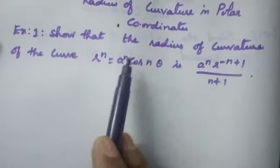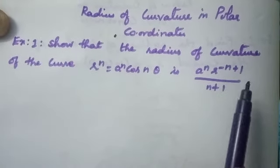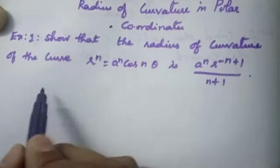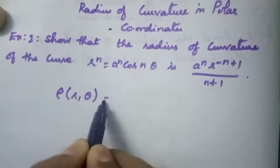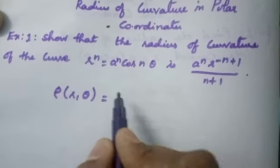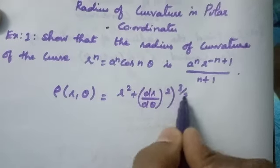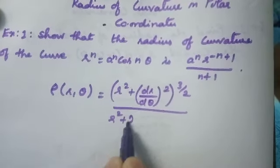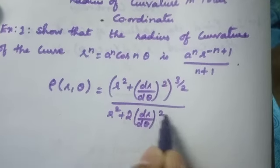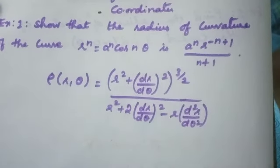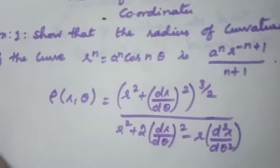The question is: show that the radius of curvature of the curve r^n = a^n cos(nθ) is equal to a^n · r^(−n+1) / (n+1). The formula for radius of curvature in polar coordinates is: ρ = [r² + (dr/dθ)²]^(3/2) divided by [r² + 2(dr/dθ)² − r·(d²r/dθ²)]. We will use this formula.